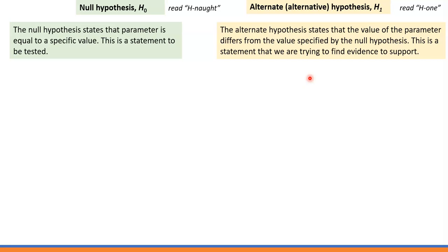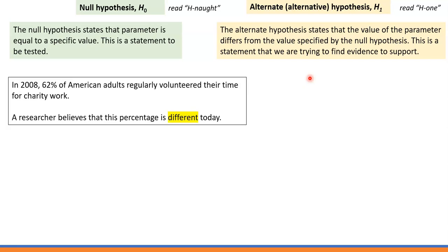Let's go back to our examples and determine the null hypothesis and alternative hypothesis for each. In the first example, the null hypothesis states that the parameter is equal to a specific value. The parameter here is the percentage of American adults that regularly volunteer their time for charity work — that's a proportion. So the null hypothesis is that proportion equals 62%.